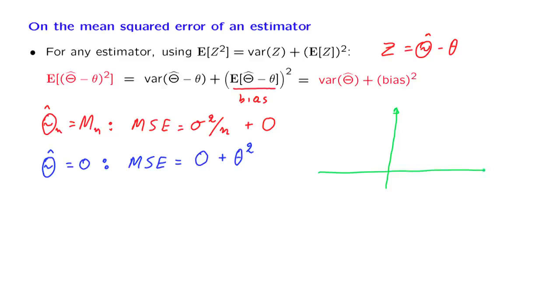Let us now compare the two estimators. We will plot the mean squared error as a function of the unknown parameter theta. For the sample mean estimator, the mean squared error is constant, does not depend on theta, and is equal to this value, sigma squared over n.